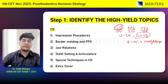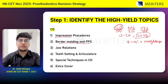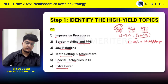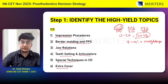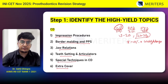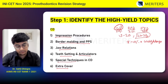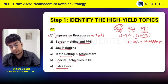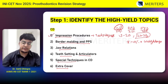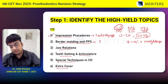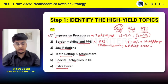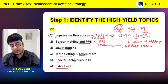In CD, we have a total of six chapters starting from impression procedures, border molding and posterior palatal seal, followed by jaw relations, teeth setting, articulators, special techniques, and miscellaneous. You have to cover CD in entirety because almost 50 percent of prosto questions will be asked from CD. The most important topics in CD specifically are impression procedures, where they will ask about techniques of impression making and different techniques. In border molding and PPS, they will mostly ask about the PPS, primary stress bearing areas, secondary stress bearing areas, relief areas, and anatomical landmarks.